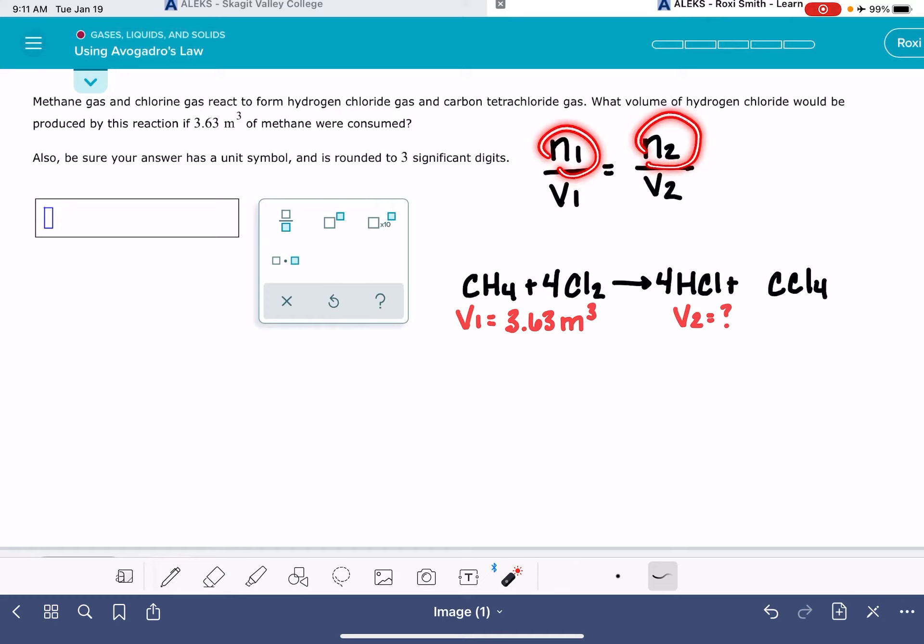What about the N variables? Well, these variables are going to come from the stoichiometric coefficients in the balanced chemical equation. And we're going to be matching the numbers N1 and V1 to the same molecule. So since V1 applies to methane, N1 also applies to methane. Since V2 applies to HCl, N2 is also going to apply to HCl.